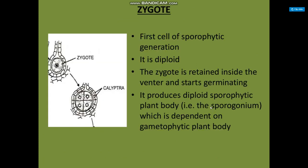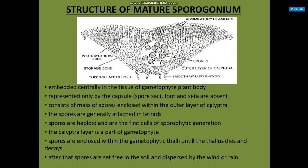Sporophytic generation: the first cell of the sporophytic generation is the zygote. It is diploid and is retained inside the venter where it starts germinating. It produces a diploid sporophytic plant body called the sporogonium, which is dependent on the gametophytic plant body. The mature sporogonium is embedded centrally in the tissue of the gametophytic plant body and is represented only by the capsule — foot and seta are absent. It consists of a mass of spores enclosed within the outer layer called the calyptra. Spores are generally attached in tetrads and are haploid. The calyptra layer is a part of the gametophyte. Spores are enclosed within the gametophytic thallus until the thallus dies and decays.